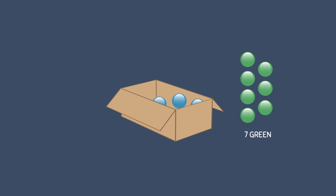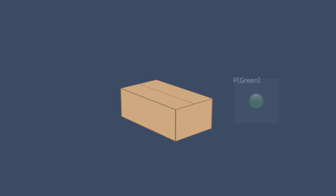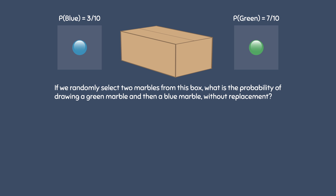For example, suppose we have a box that contains 10 marbles — 7 of the marbles are green and 3 of the marbles are blue. The probability of drawing 1 green marble is 7 over 10, or 0.7, and the probability of drawing 1 blue marble is 3 over 10, or 0.3. If we randomly select 2 marbles from this box, what is the probability of drawing a green marble and then a blue marble without replacement? A common mistake is multiplying 7 over 10 times 3 over 10, but this process is incorrect. This formula can only be used for independent events, and we know this is not independent since the marbles are being drawn without replacement. The term 'without replacement' means we are drawing the marble without putting it back into the box.